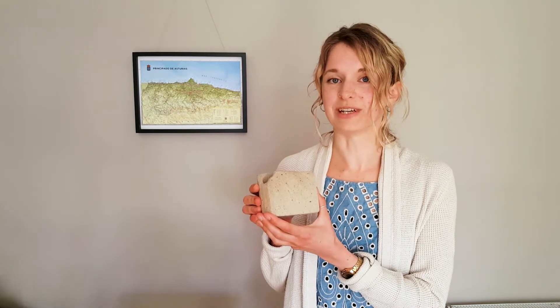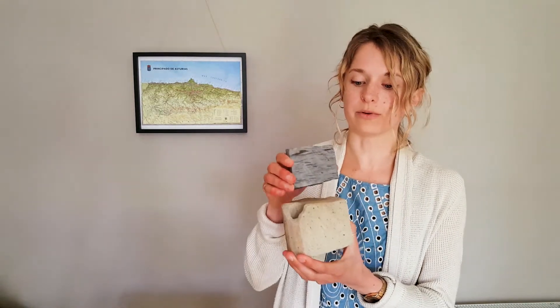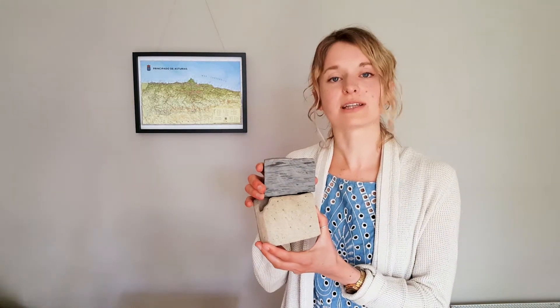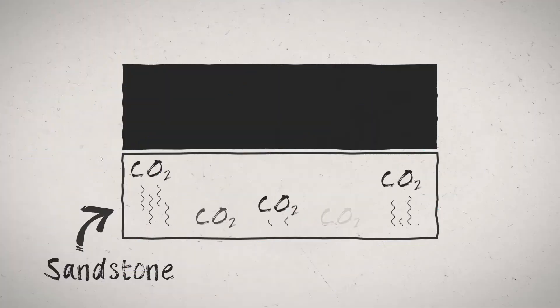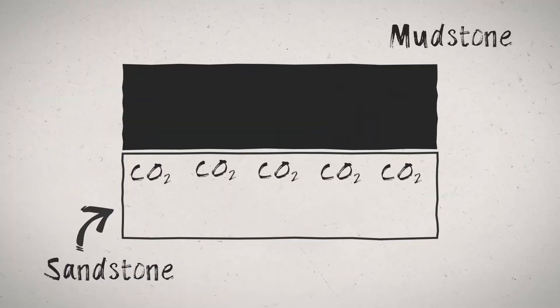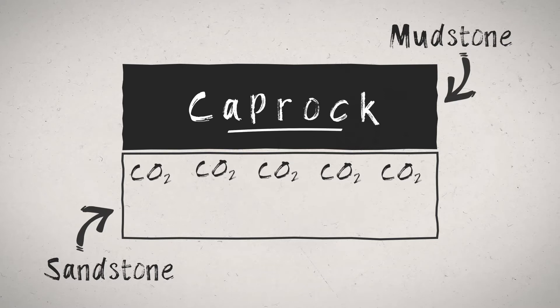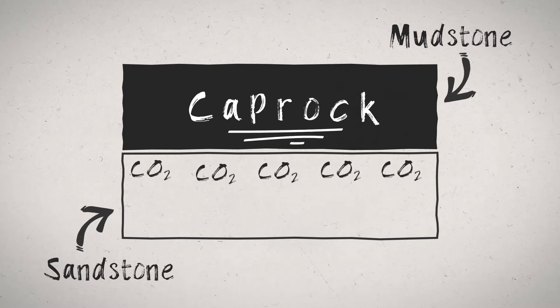You may have spotted an issue here — what's to stop the CO2 just rising to the surface? Well, that's where our mudstone comes in. As this is impermeable, when we inject the CO2 and it rises to the top, it will stop where it meets the mudstone as it cannot pass through it. So this mudstone acts like a caprock or a seal, which will stop the CO2 from ever reaching the surface.